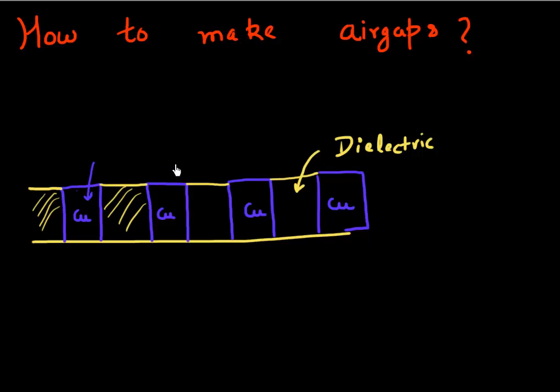Being the dork that I am, the very simple first thought that comes to mind for how to create this air gap is to essentially just etch this dielectric out. We could do a very selective etch which etches this dielectric out, and we are left with this air gap between our copper lines.